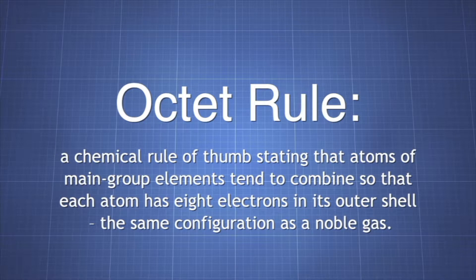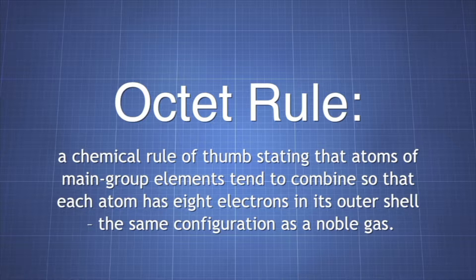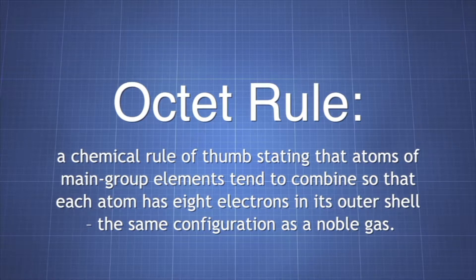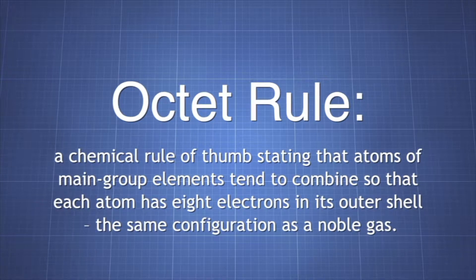But in general, the octet rule means the atoms of main group elements tend to combine so that each atom has eight electrons in its outer shell, giving the atoms in a molecule the same configuration as a noble gas.